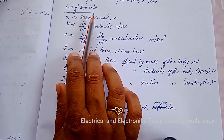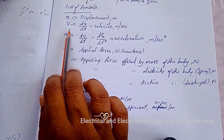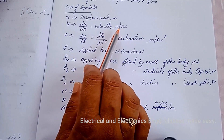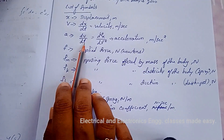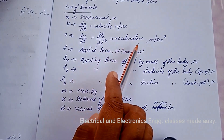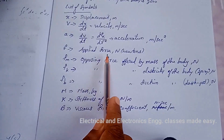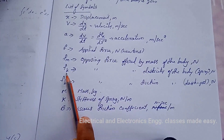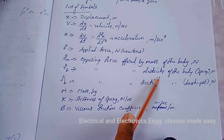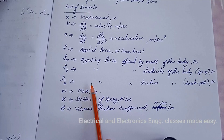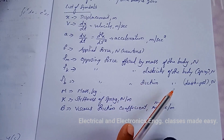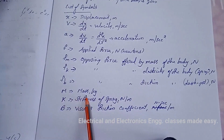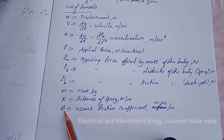The symbols used in mechanical translation systems are: x — displacement in meters; v = dx/dt — velocity in meters per second; a = dv/dt or d²x/dt² — acceleration in meters per second squared; F — applied force in newtons; Fm — opposing force offered by mass in newtons; Fk — opposing force offered by elasticity (spring) in newtons; Fb — opposing force offered by friction (dashpot) in newtons; m — mass in kilograms; k — stiffness of spring in newtons per meter; b — viscous friction coefficient in newton-seconds per meter.